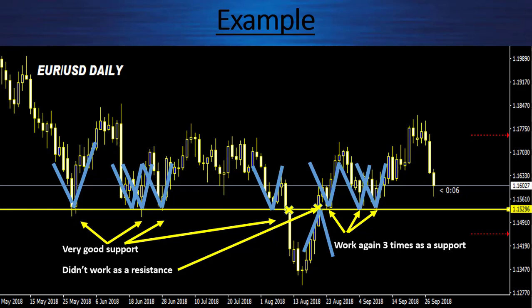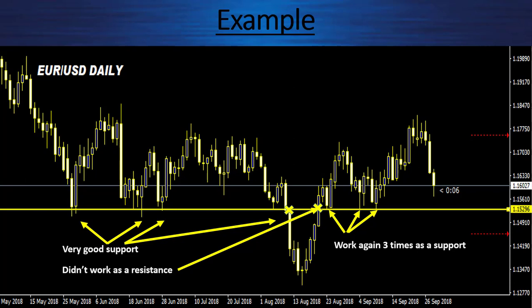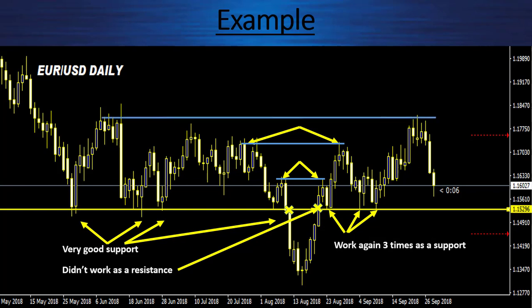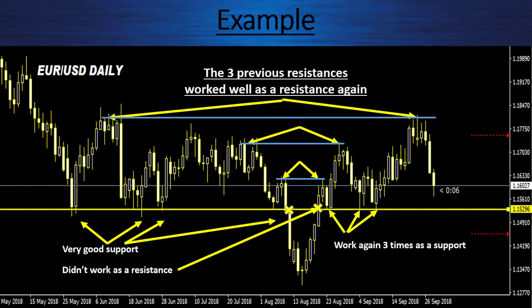Now let's forget about the support and look at some resistance. When the price leaves the zone and comes back up, we could have taken this previous resistance right here — as it reacts well — and we have a nice big candle rejection at this level when it comes back. Then we have the second level of resistance that reacts perfectly as a resistance when the price comes back. And finally, on this specific chart, our third level of resistance reacted once again perfectly as a resistance on this daily chart. So we have a level of support that reacts very well as a support but not so much as a resistance, and three levels of resistance that react perfectly as resistance. Why is that?